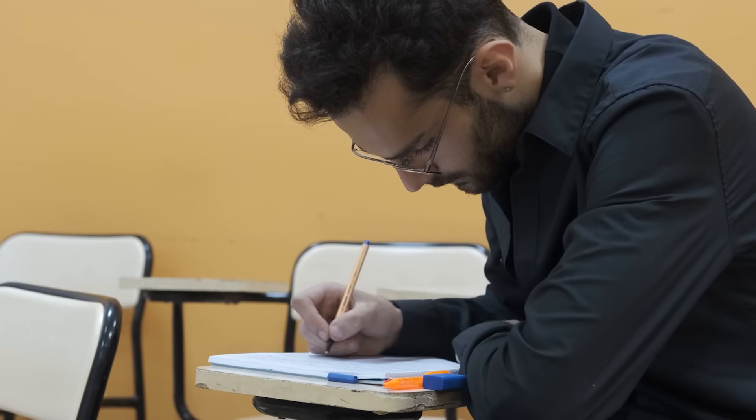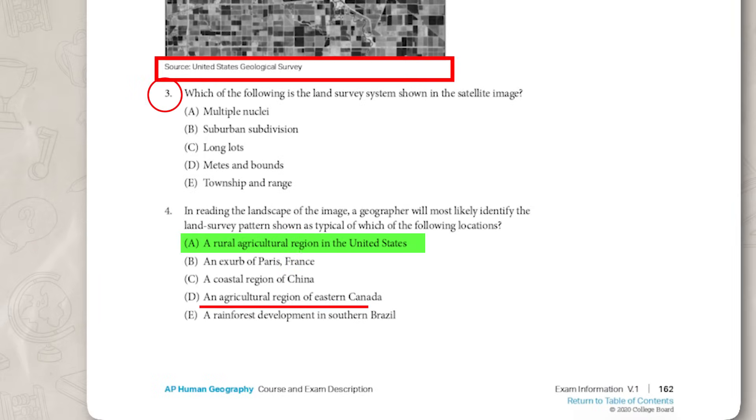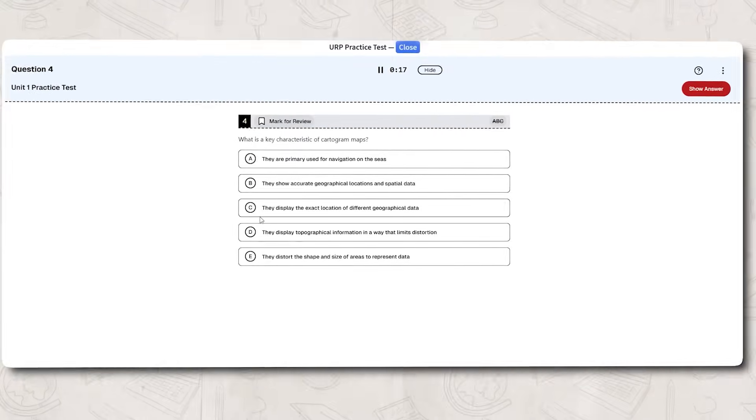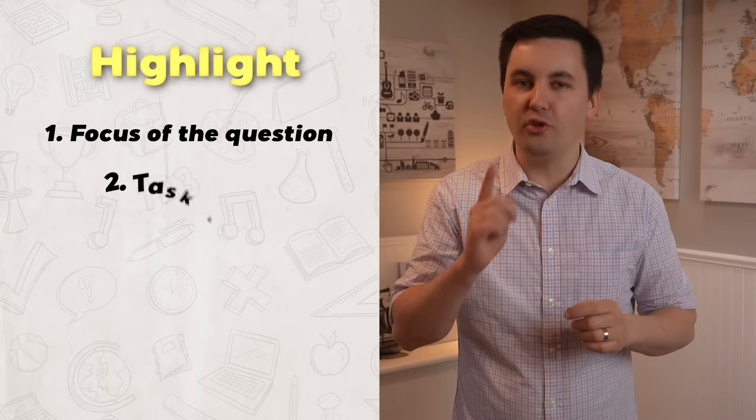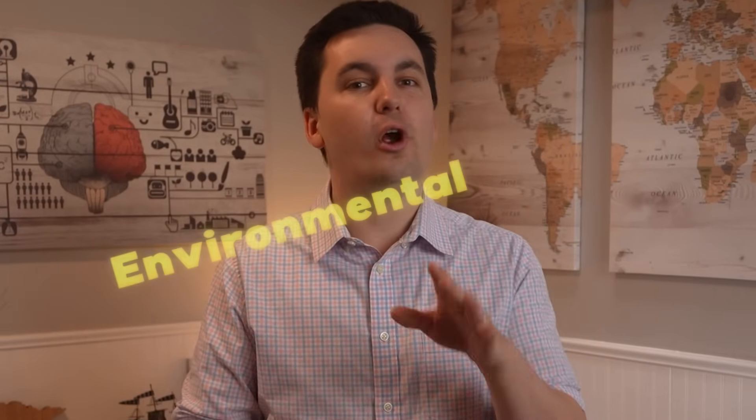You also need to be active when taking this test. What I mean is you need to circle, highlight, underline, label — just mark up the test. This not only helps you slow down, but makes sure you do not miss any key details. And yes, you can do all of this digitally. During a test you are stressed and concerned about time, which causes you to speed-read and skim, resulting in you missing easy points. Make sure to highlight any vocab terms you see, the focus of the question, and the task verb. Also be on the lookout for the scale and the theme — for example, is the question asking about political, social, environmental, or economic factors?